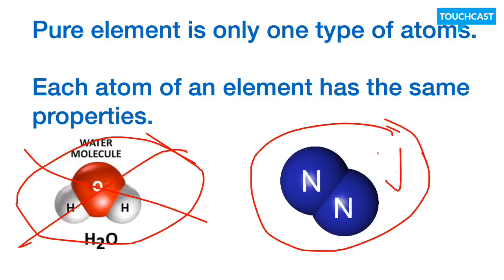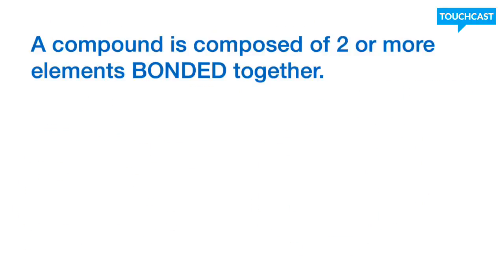All right, let's go ahead and move on to compounds. Now, a compound is composed of two or more elements bonded together. And, we'll emphasize the word bonded. Once they form that, basically, that link between the atoms, it fundamentally changes how those two elements react. So, let's go ahead and look at some examples.